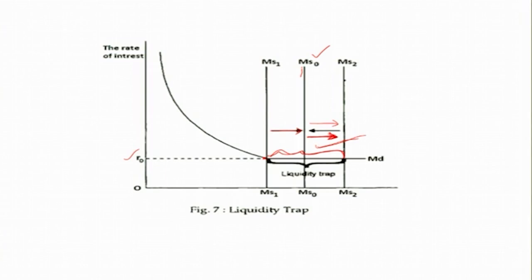In this session we completed our discussion on the demand for money, mostly confined to the speculative demand for money, where we related it with the bond market and the rate of interest. In the next session we will discuss the differences in interest rate for different debt instruments and the factors that explain these differences — the factors determining the fluctuations in the rate of interest. Thank you.